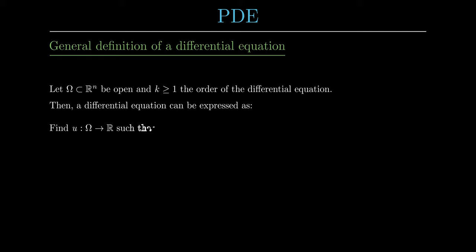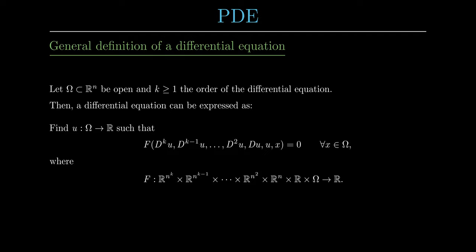A differential equation can be expressed as: find a mapping u from omega into the real numbers such that f is zero for all points inside the domain omega. Here the function f represents the differential equation and can depend on the points x, the solution u, and all the derivatives of u up to the k-th order.